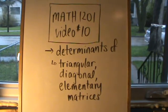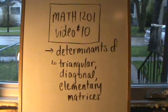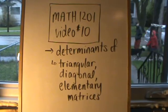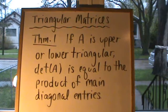This is Math 1201 video 10. We are going to take a look at how to calculate determinants of upper and lower triangular matrices, diagonal matrices, and elementary matrices. We're going to start off this video lecture by taking a look at triangular matrices and diagonal matrices.